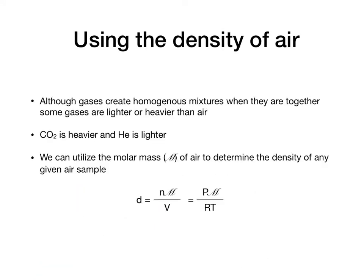Another thing we can do with PV equals NRT is solve for the density of a gas. Different gases have different densities — helium is lighter, which is why helium balloons float; CO2 is heavier. Ether gas is quite heavy and tends to creep along the floor. We can use the molar mass, scripty M, to determine the density of any given gas sample.